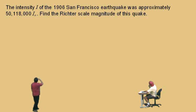Basically, you're given the formula here. Magnitude is equal to log base 10 of I over I-knot.